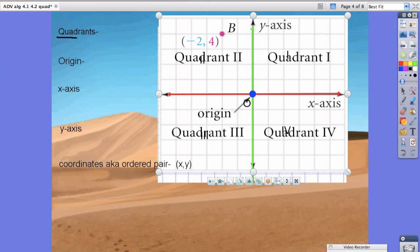We're going to start at the origin, and because your x, which is your left and right value, says negative 2, we're going to move two places to the left because it's negative. And because the 4 is a positive on the y-axis, means we move up 4. So 1, 2, 3, 4. And we always start at the origin.